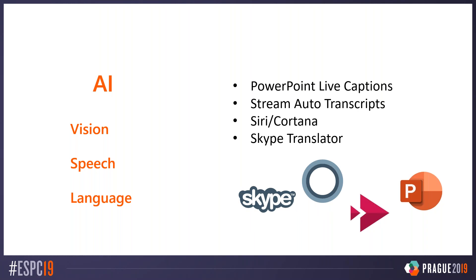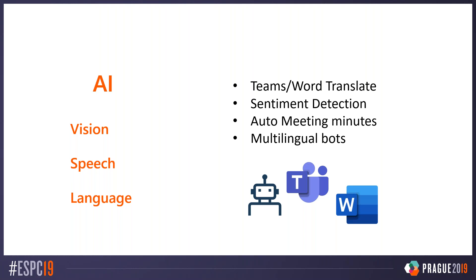In terms of speech, we have PowerPoint live captions, and Stream auto transcripts — now available in eight languages, not only English and Spanish, even German. Then Siri, Cortana, and the whole translation thing. In language understanding, you're probably familiar with the capability that Teams can auto translate your messages. You can point to a text and select translate on the action menu. It translates whatever language you're using — really helpful if you work with colleagues speaking a totally different language.